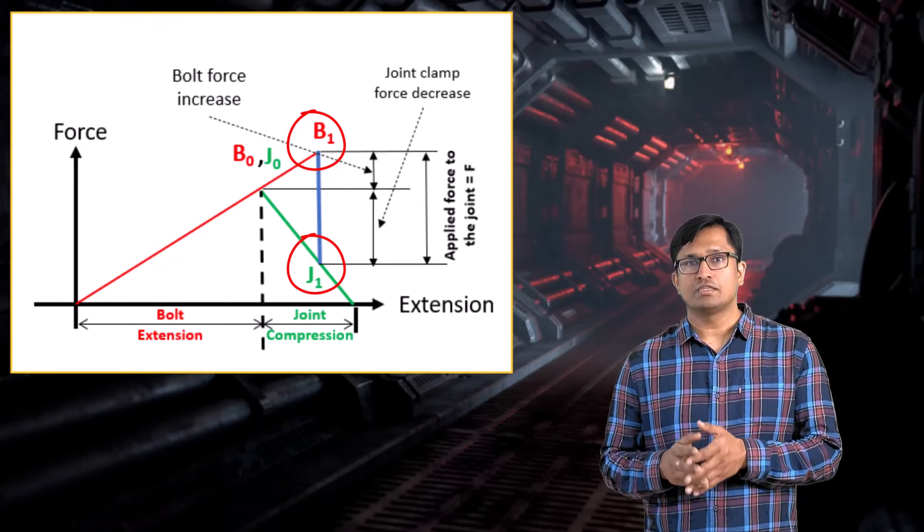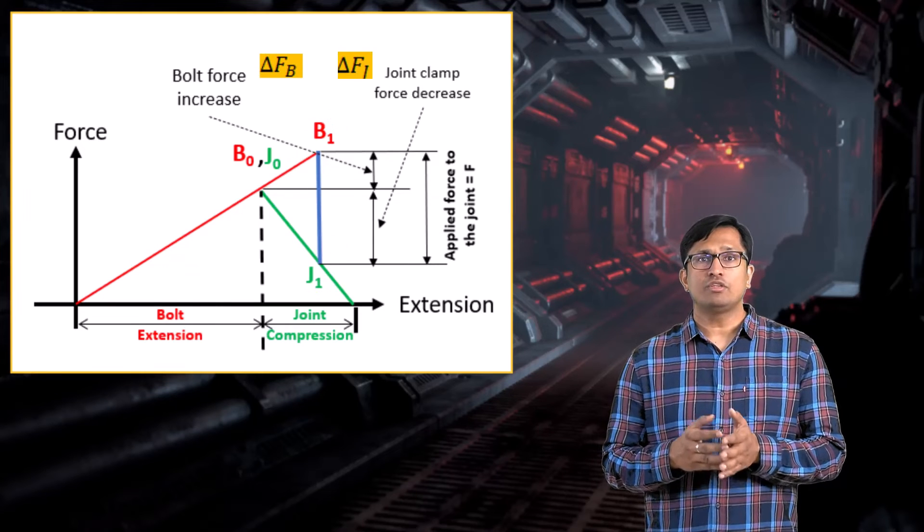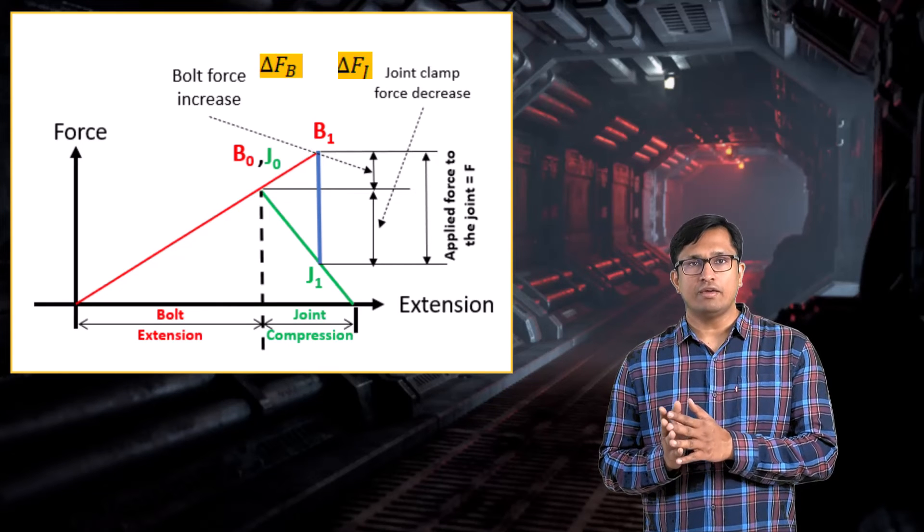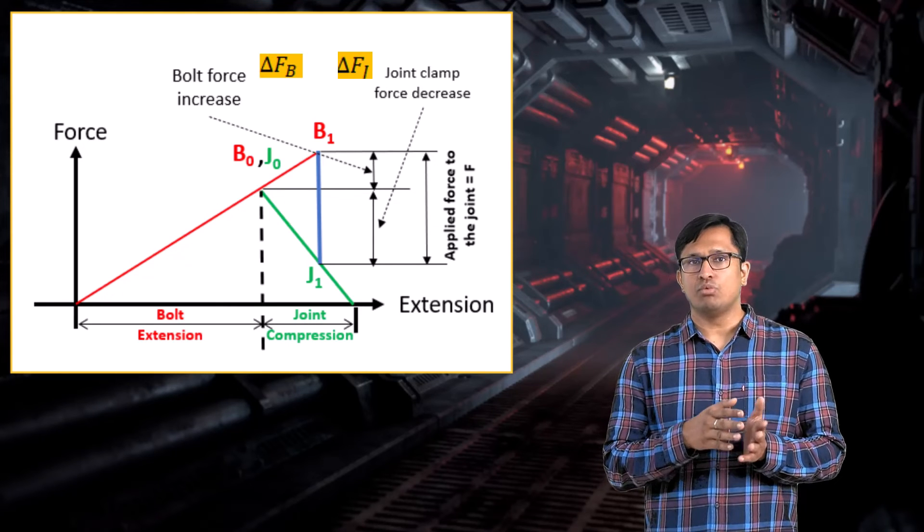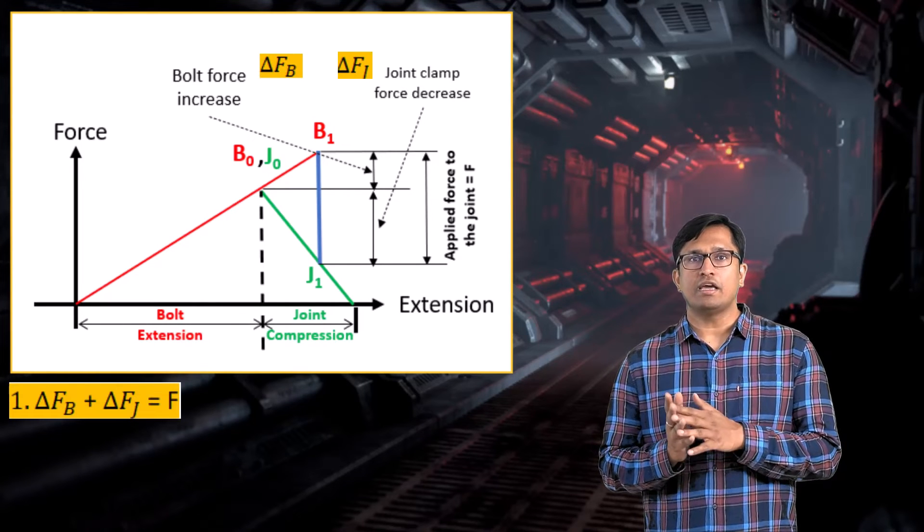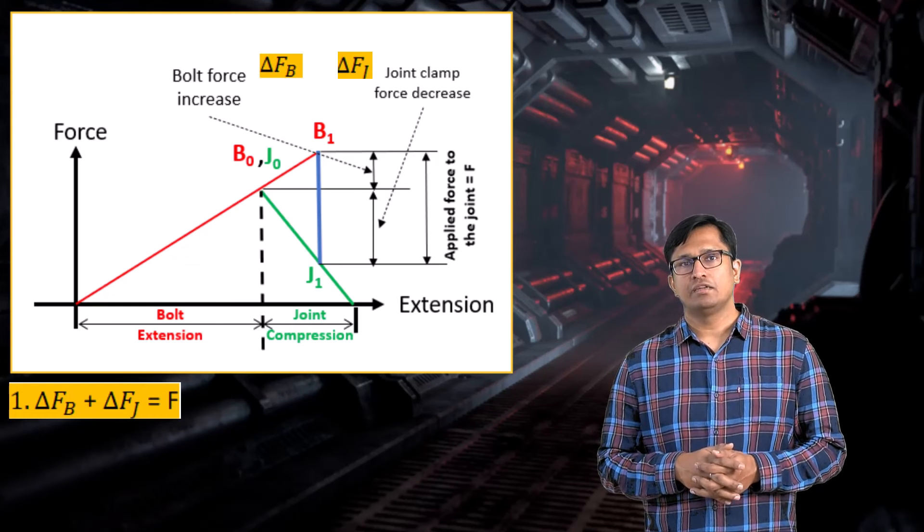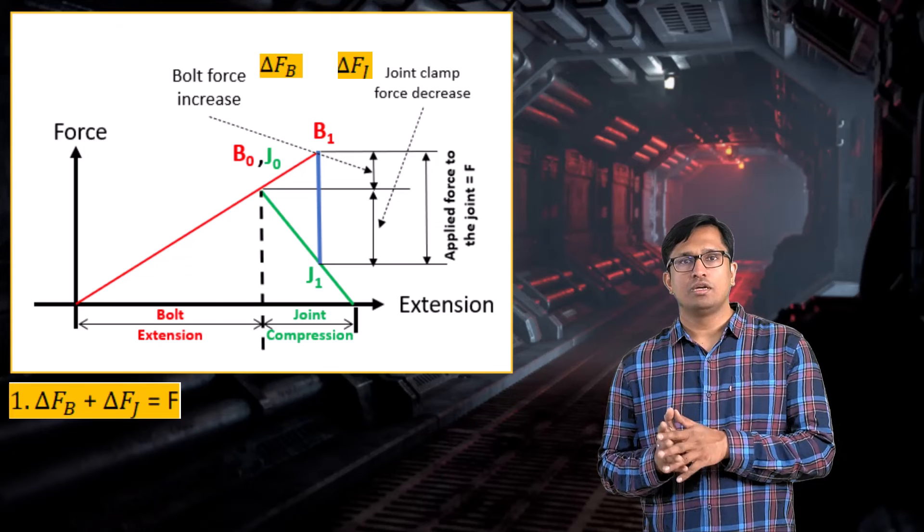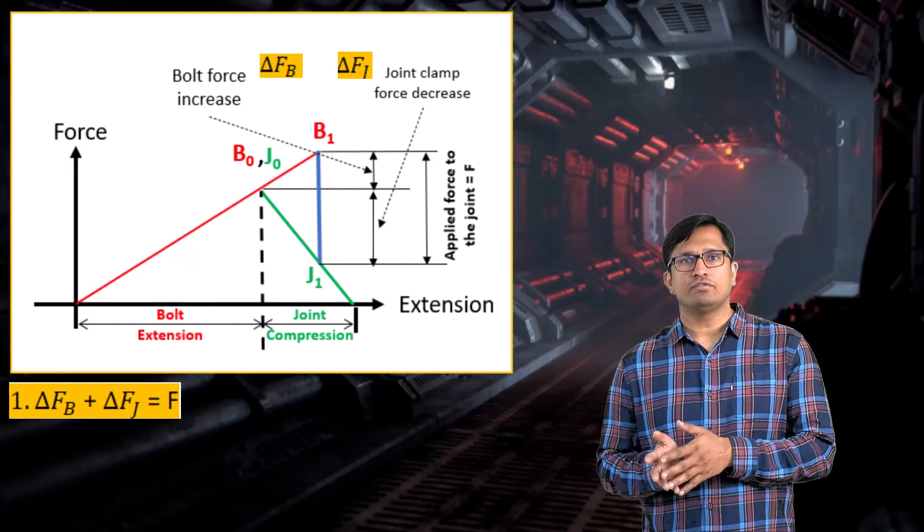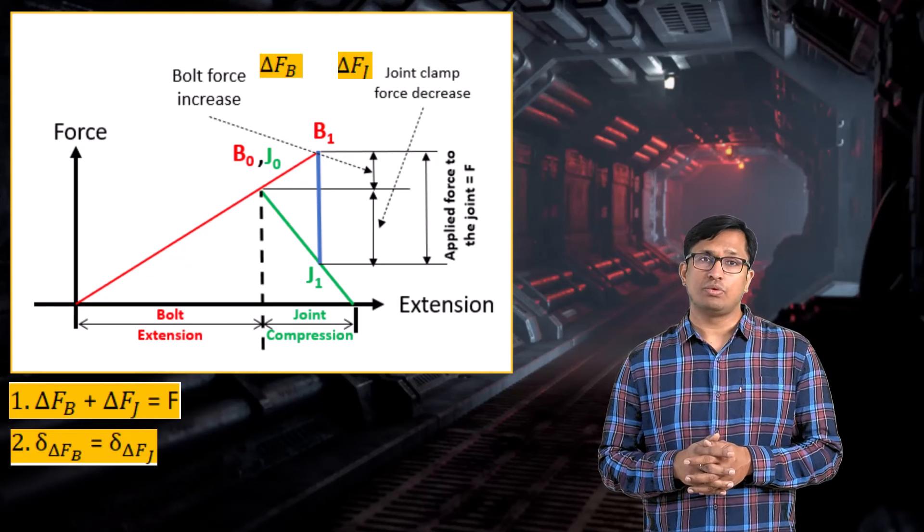The changes in forces delta Fb and delta Fj need to fulfill two conditions. First, the total external load F is distributed between the bolt and the joint. Hence, delta Fb and delta Fj should add up to F. Secondly, the change in deformation of the bolt and the joint due to delta Fb and delta Fj respectively should be the same. This gives us another equation.